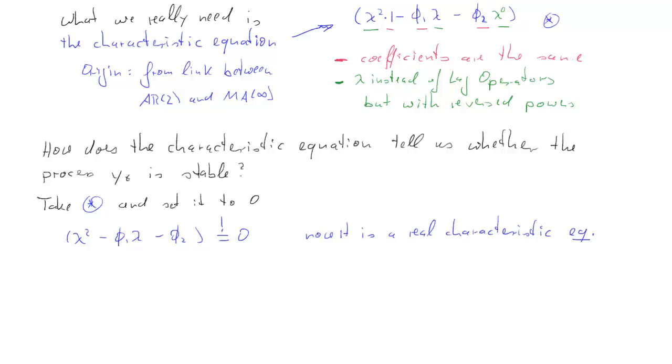Now it is an equation that has an equal sign in here. So what we now need to do is, we need to basically, we have a quadratic equation here, and we need to find the two solutions, lambda_1 and lambda_2, that make this equation true.